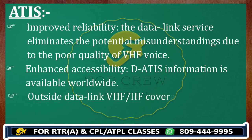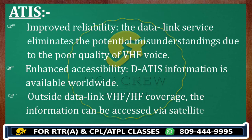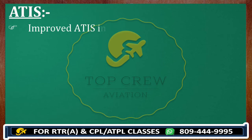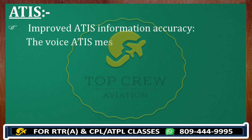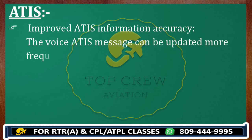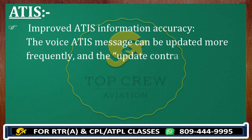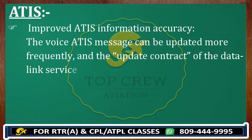Enhanced accessibility: DATIS information is available worldwide. Outside data link VHF coverage, the information can be accessed via satellite data link. Improved ATIS information accuracy: the voice ATIS message can be updated more frequently, and the update contract of the data link service enables pilots to receive the ATIS information each time it is updated.